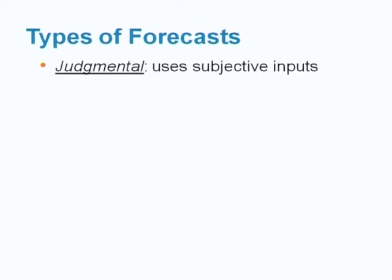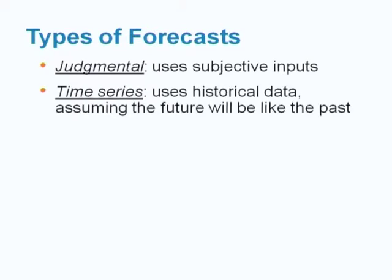Types of forecast. The first type is judgmental, which relies on analysis of subjective input obtained from various sources such as customer surveys, the sales staff, and managers and executives. The second type is the time series forecast.